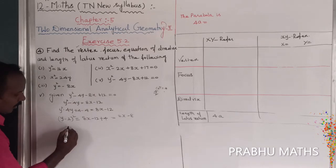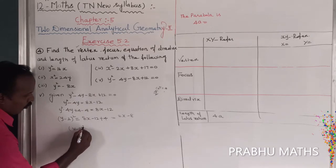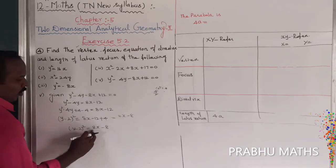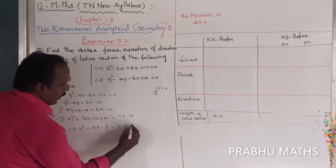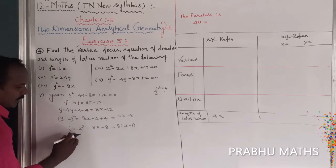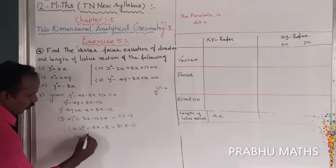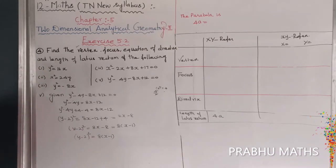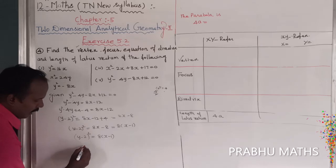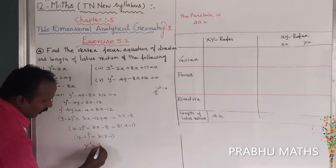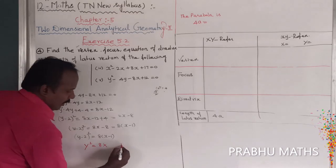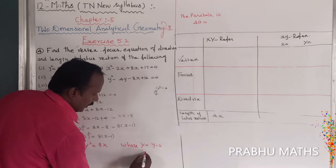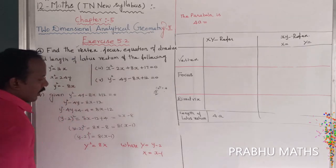This gives (y minus 2) squared equals 8x minus 8. Factor out 8 from the right side: (y minus 2) squared equals 8(x minus 1). This is compared to the standard form y squared equals 4ax, where the substitution variables are x-bar = x minus 1 and y-bar = y minus 2.